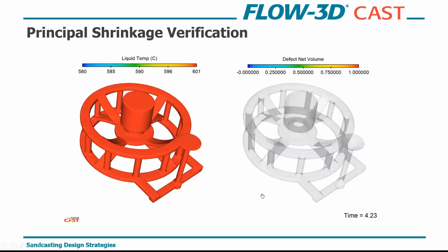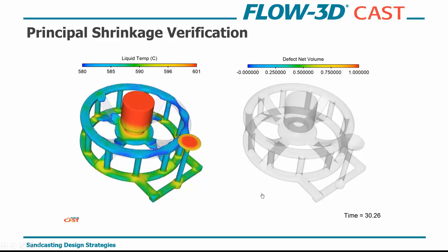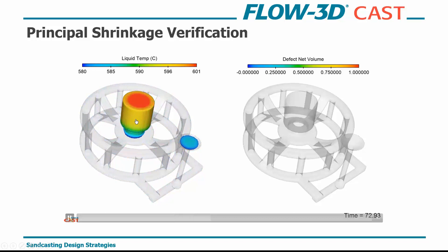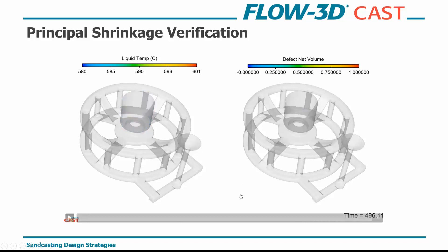Next we look at our principal shrinkage verification with the principal shrinkage model turned on. We look at the same things: overall liquid temperatures and porosity formation output. We see the same solidification behavior and can see if the riser is going to feed until the very end. We're outputting no defect volume, which is a great marker that this may be a design we can move forward with.